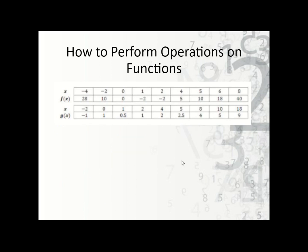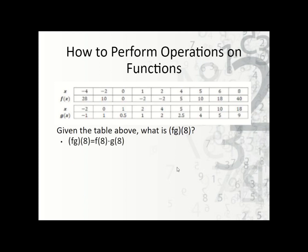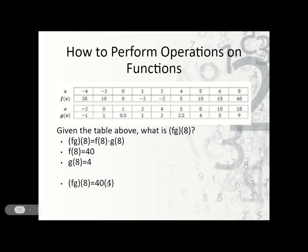Here's another example: fg of 8. fg just means multiplication, so we break it up and it becomes f of 8 times g of 8. f of 8 is 40, and g of 8 is 4. So we multiply these together: 40 times 4 is 160.